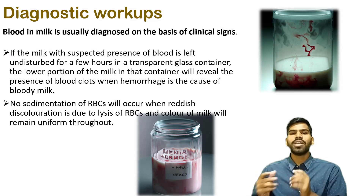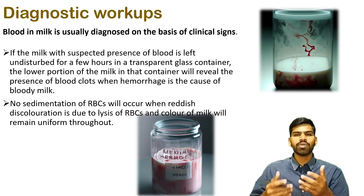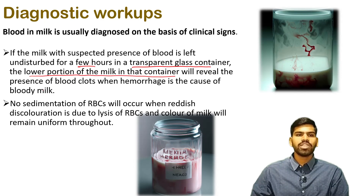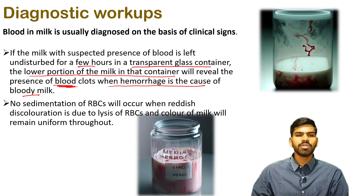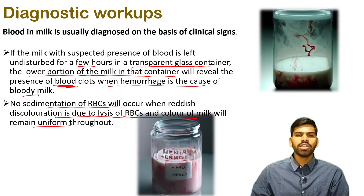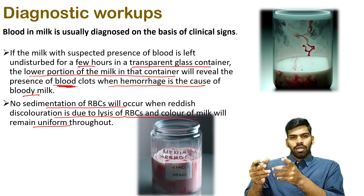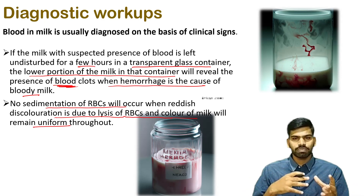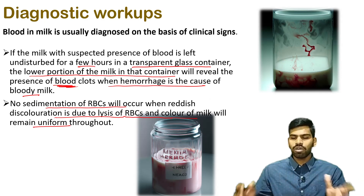How to diagnose blood in milk? There are several diagnostic workups. If milk with suspected presence of blood is left undisturbed for a few hours in a transparent glass container, the lower portion will reveal the presence of blood clots when hemorrhage is the cause. No sedimentation of RBCs will occur when reddish discoloration is due to lysis of RBCs — the color of milk will remain uniform throughout. In case hemorrhage is the cause, you can observe blood clots; if due to lysis of RBCs, there is no sedimentation even after a few hours.